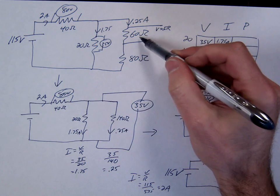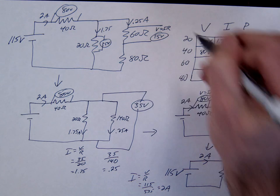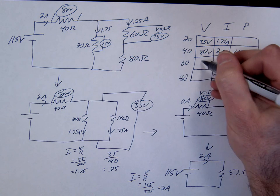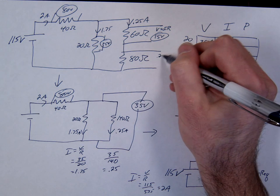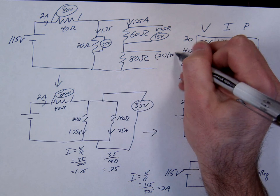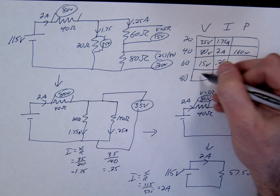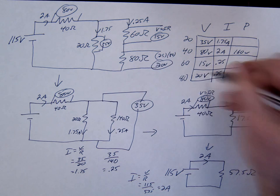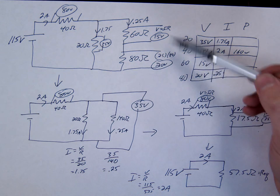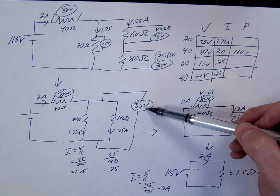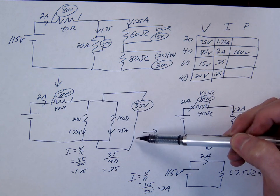So 0.25 times 60, 15 volts. 15 volts. And 0.25 times 80, 20 volts. 20 volts. What's the last mini check we can do? What should these two add up to? The 35. So the 20 plus the 15 should add up to that total 35.